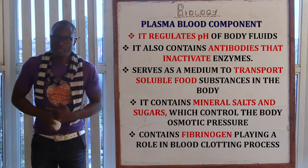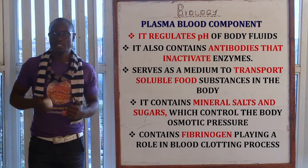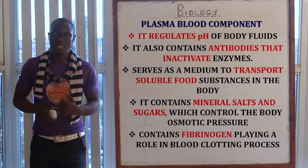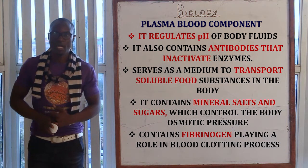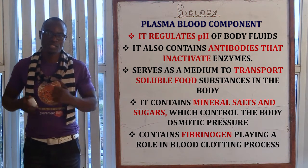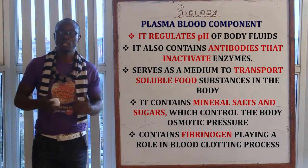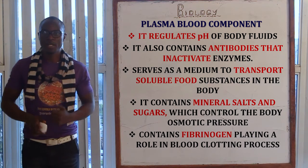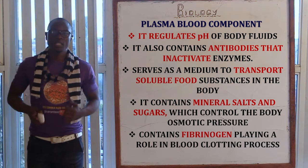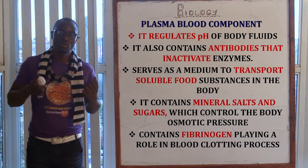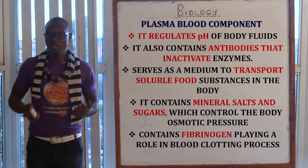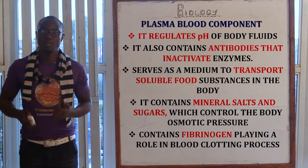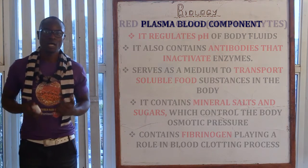The plasma contains different antibodies that help inactivate harmful agents found in the body. The plasma also serves as a medium for the transport of soluble food substances in the body, and it contains minerals, salts, and sugar controlling the body's osmotic pressure. Finally, the plasma contains fibrinogen, which plays a very important role in the blood clotting process.